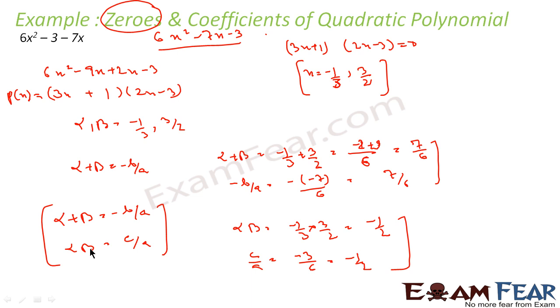So if asked: the zeros are −1/3 and 3/2, and the coefficients are A = 6, B = −7, and C = −3.